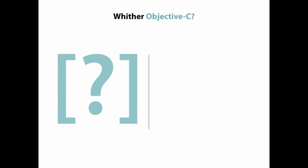But what about Objective-C? Apple has been the sole steward of this language for nearly two decades. Are we just supposed to throw our Objective-C code out and convert it all to Swift? Well, the short answer is no. Objective-C isn't leaving the Apple ecosystem any time soon. There are a vast number of existing APIs written in Objective-C that may never get converted to Swift. But that's no problem because Swift and Objective-C can easily interoperate with each other. You can even mix and match the two languages within a single project.